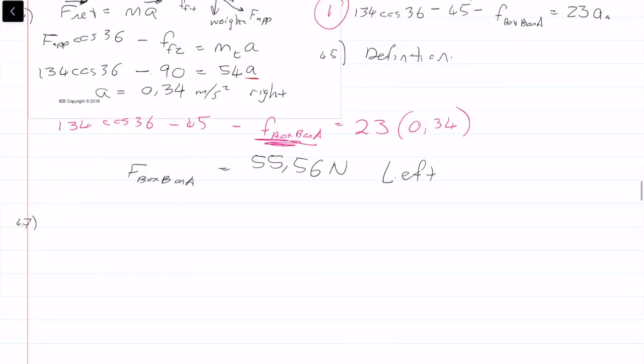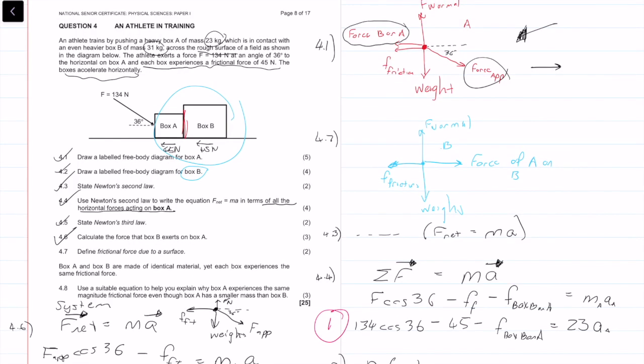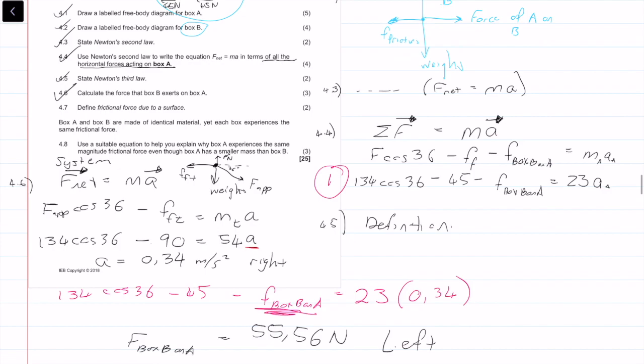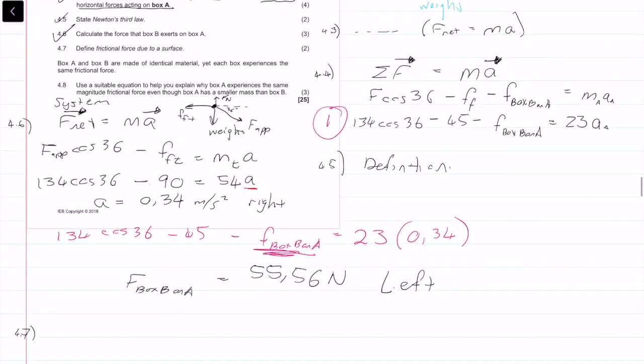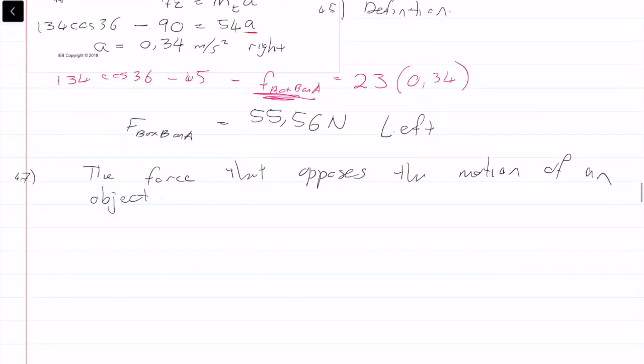4.7 - just for clarification, the way I got the direction is because we're looking at this force right here, and this free body diagram shows that the force is to the left direction, and we got that correct, the maths sorts that out. It says define the frictional force, another definition. We've got six marks just from definitions here. The frictional force is the force that opposes the motion of an object.